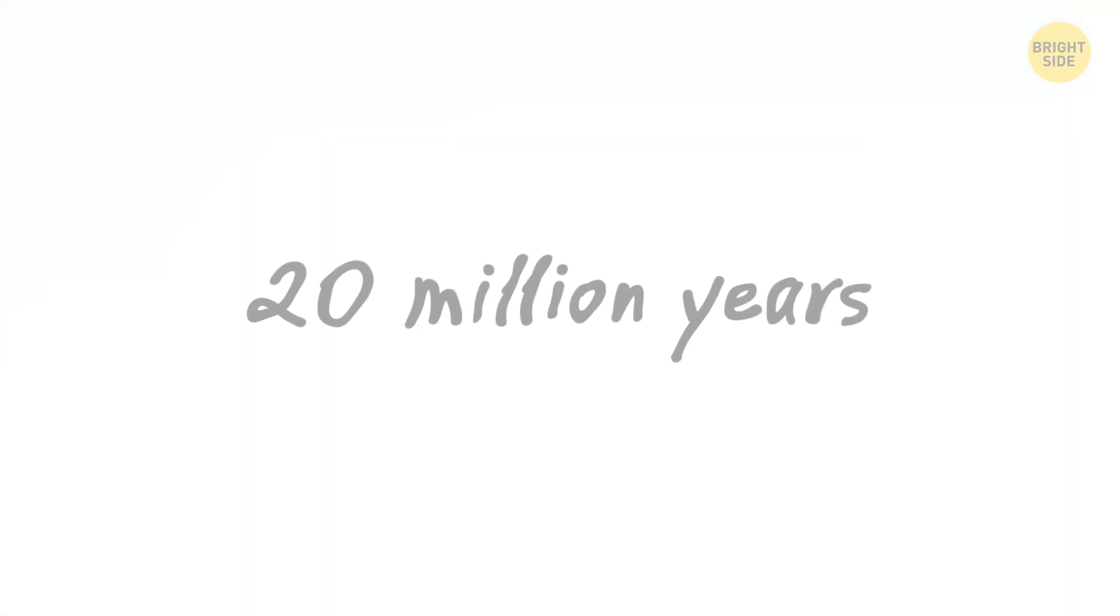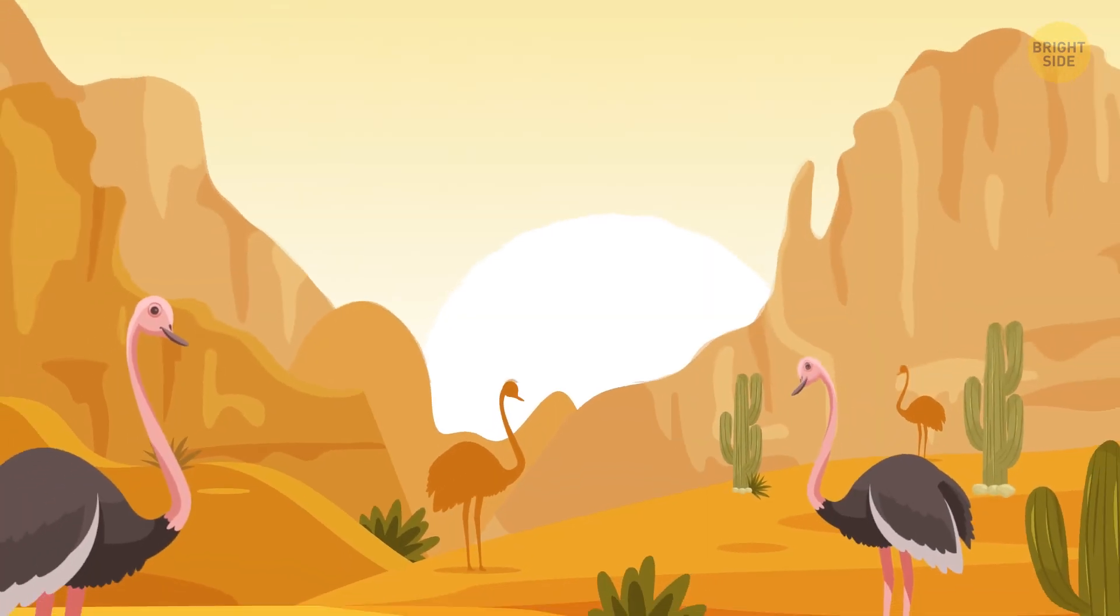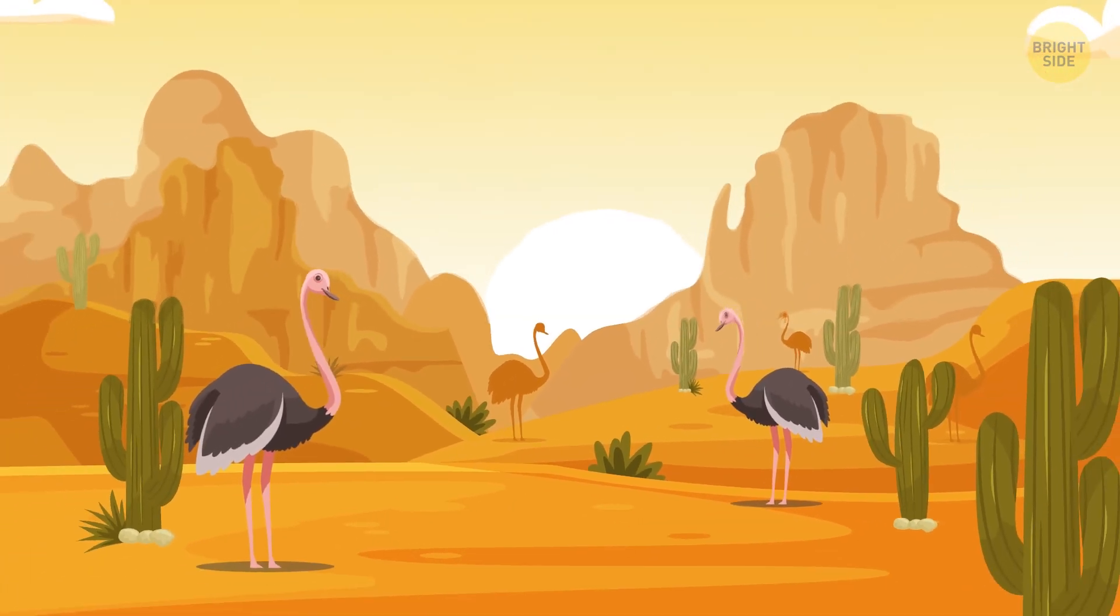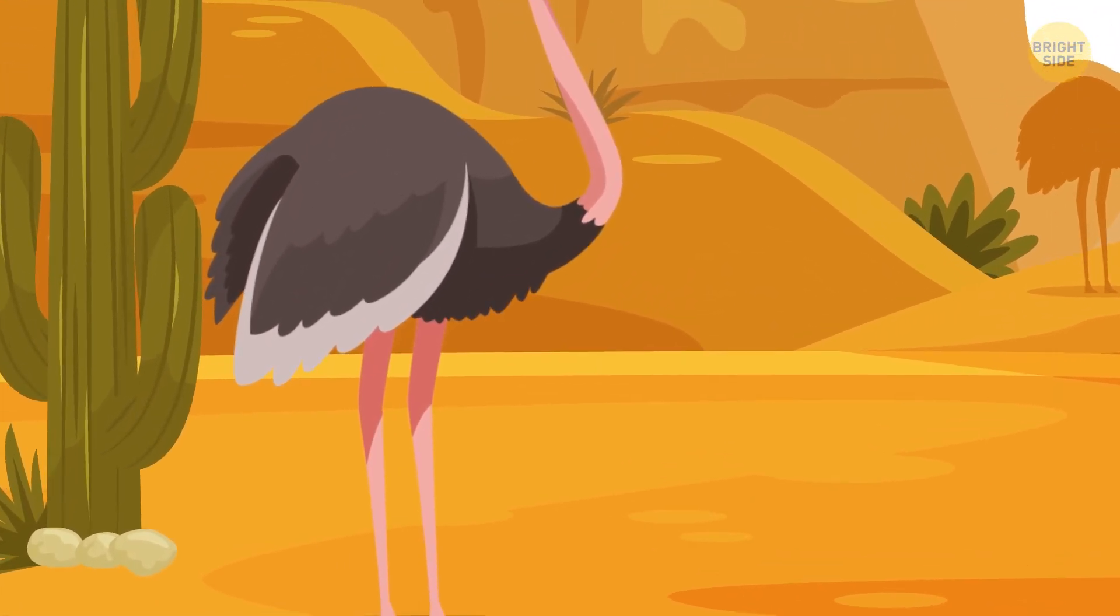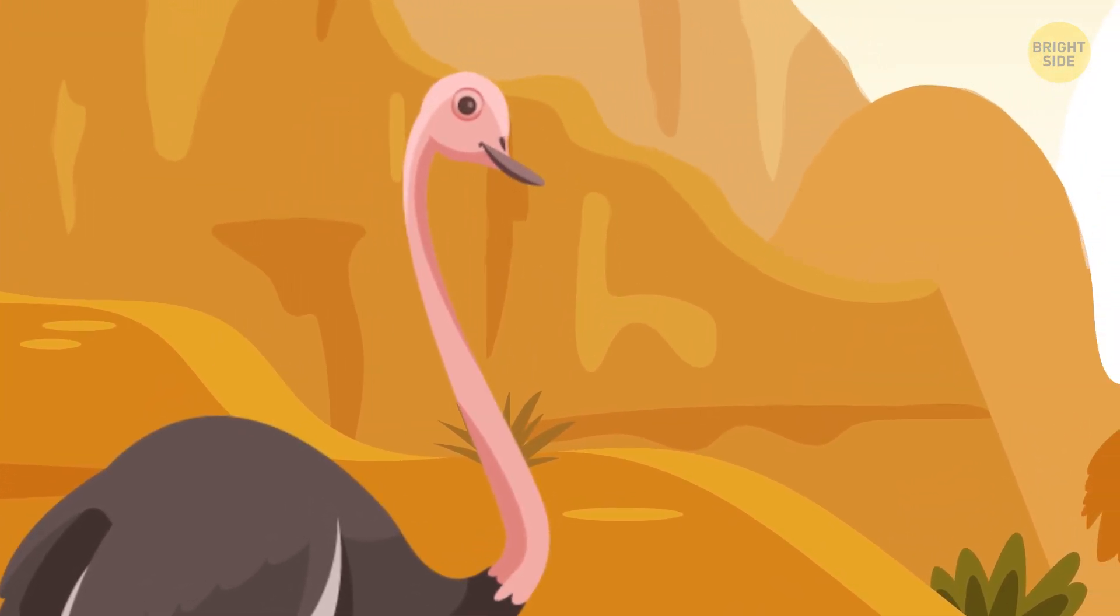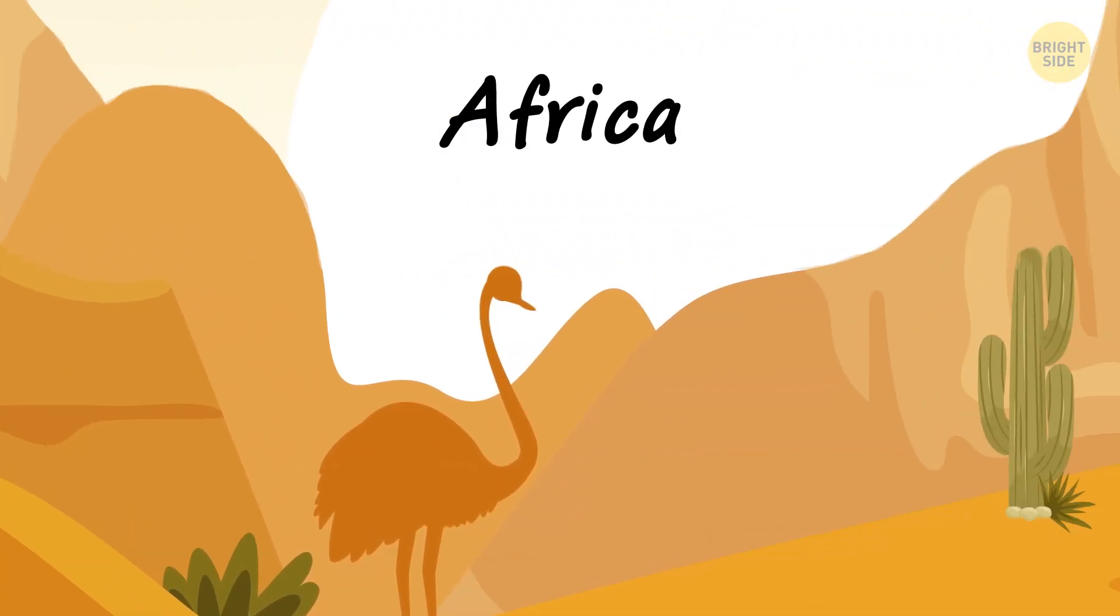The machine takes Sam 20 million years into the past, and he sees the first ostriches. The largest living bird with eyes so big that they're larger than the bird's brain first appeared in Africa.